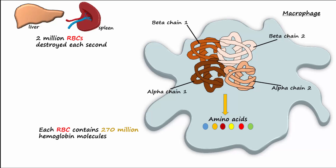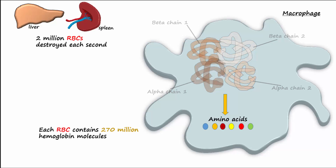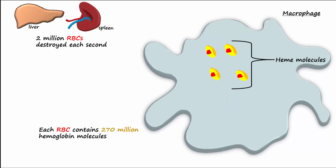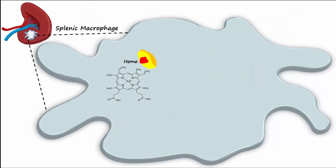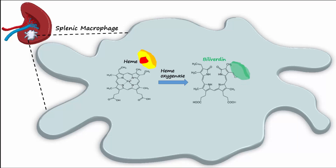The leftover heme molecules are toxic to the body and must be broken down. The process begins with the actions of an enzyme called heme oxygenase, which converts the heme into a green pigmented molecule called biliverdin. Ferrous iron is also released from the center of the molecule.